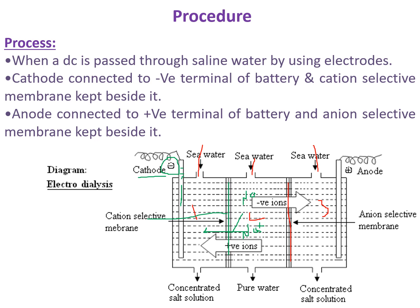The cathode attracts all Na+ ions from the middle tank to the left side through the cation selective membrane. On the right side, the anode is placed near the anion selective membrane. Since the anode has a positive charge, it attracts all negative ions. The Cl- ion is attracted by the anode, and at the same time the anion selective membrane allows the movement of anions. So all Cl- ions move from the middle tank to the right side, attracted by the anode.